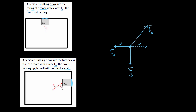There's no horizontal acceleration, so those forces balance. The vertical component of F_A has to equal the force of gravity so the box doesn't accelerate vertically. It's moving up the wall with constant speed — no acceleration — so the vertical forces must cancel. Only if it were accelerating upward would the upward force need to be bigger.